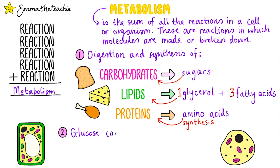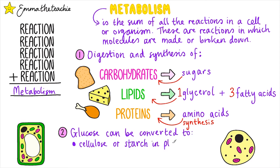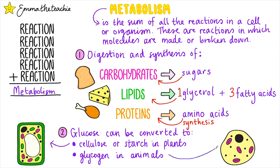Glucose can be converted into starch or cellulose in plant cells. In animal cells it can be converted into glycogen, which is an energy store for later use.